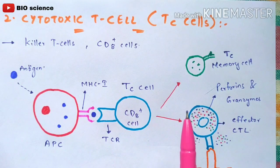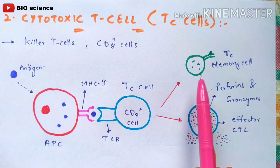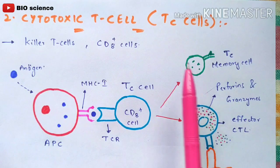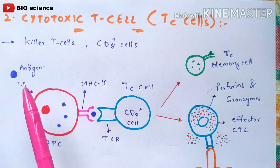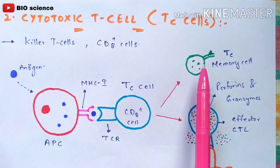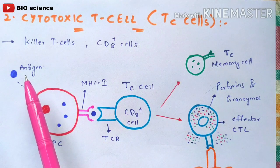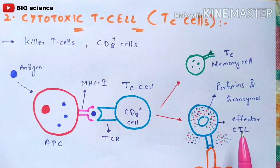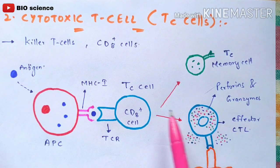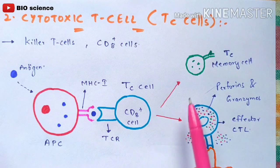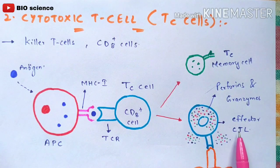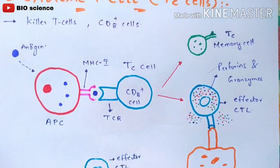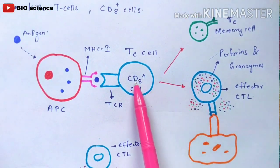Once the antigen is received by the cytotoxic T cell, it differentiates into two cells: a cytotoxic memory cell and an effector cytotoxic T lymphocyte. The cytotoxic memory cell remembers the antigen, so if the same antigen re-enters the body, the memory cell quickly interacts with and kills it. The other product is the effector cytotoxic T lymphocyte.